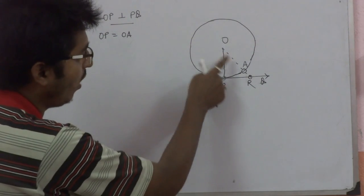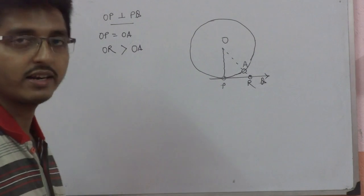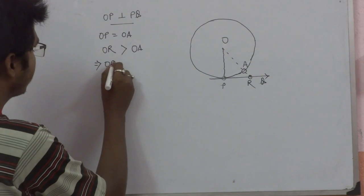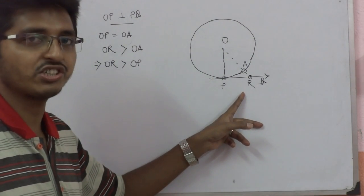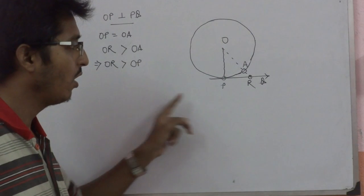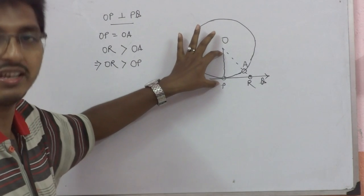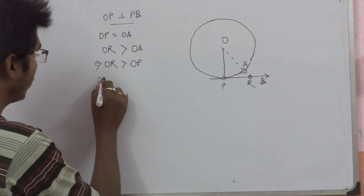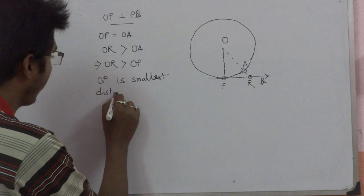Now, it is very obvious that OR is greater than OA, because OR is larger. If OR is greater than OA, obviously OR is greater than OP. Now, observe one thing. Wherever the position of R on PQ, for all R, for all position of R, OR will be greater than OP. This inequality holds good for all R, wherever R will be on PQ. That means OP is the smallest distance of all such distances from O to PQ.